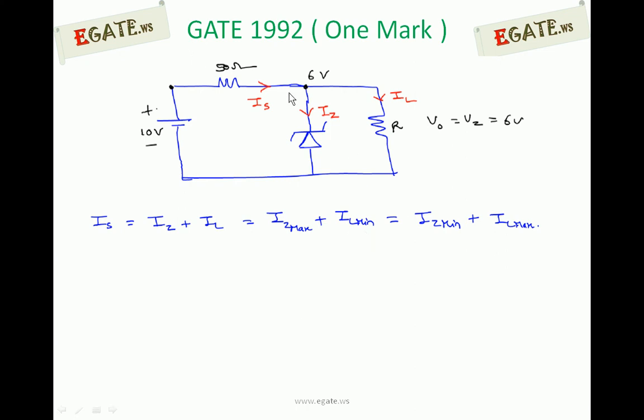Otherwise, if maximum is taken by the load resistor, IL is maximum. By that time, Zener should take minimum current such that it's working in Zener breakdown region. The current required is IZ minimum. So we can write IS as IZ minimum plus IL maximum.